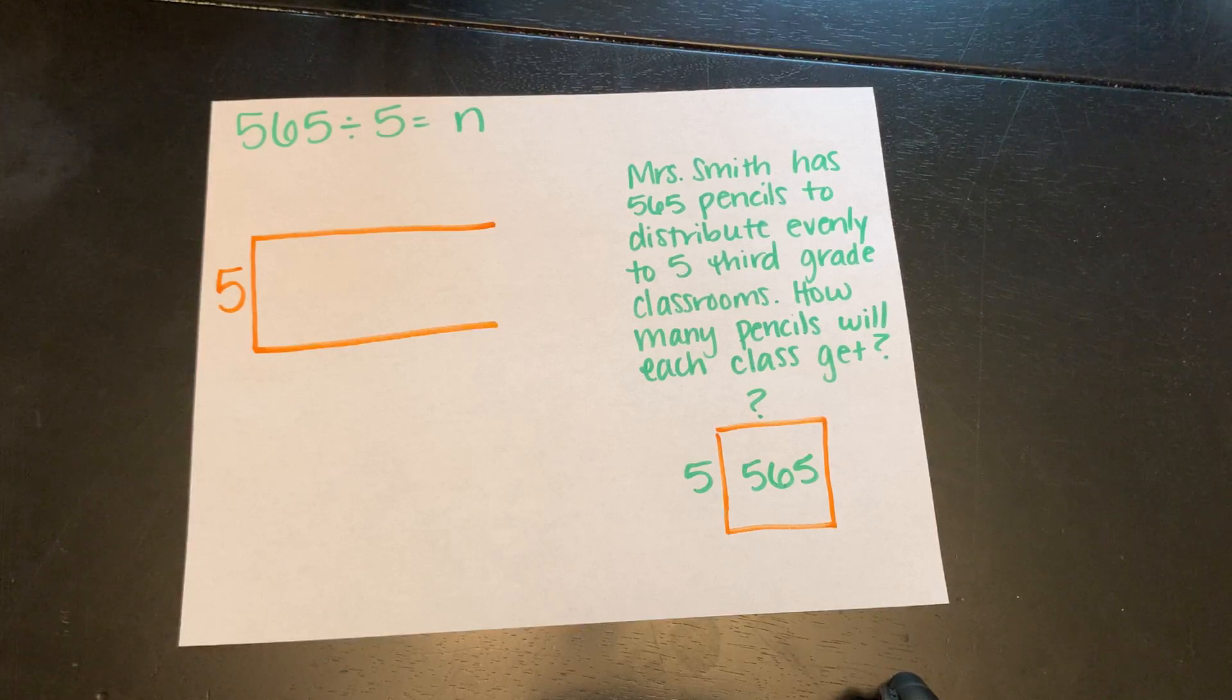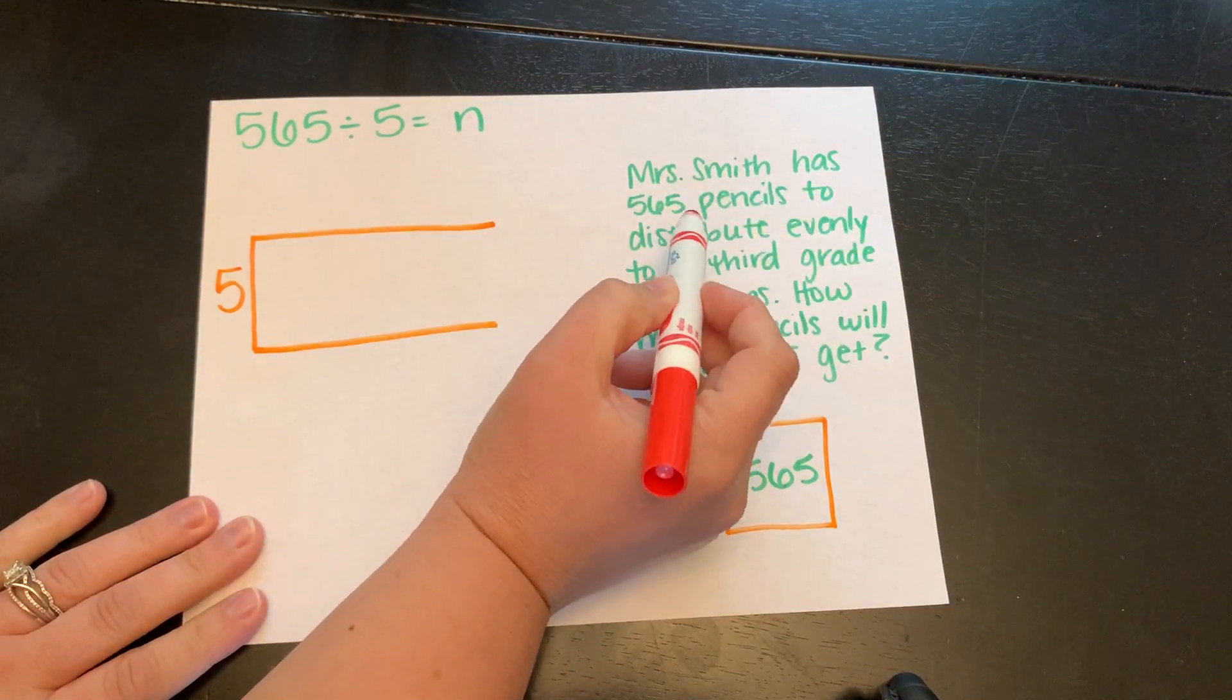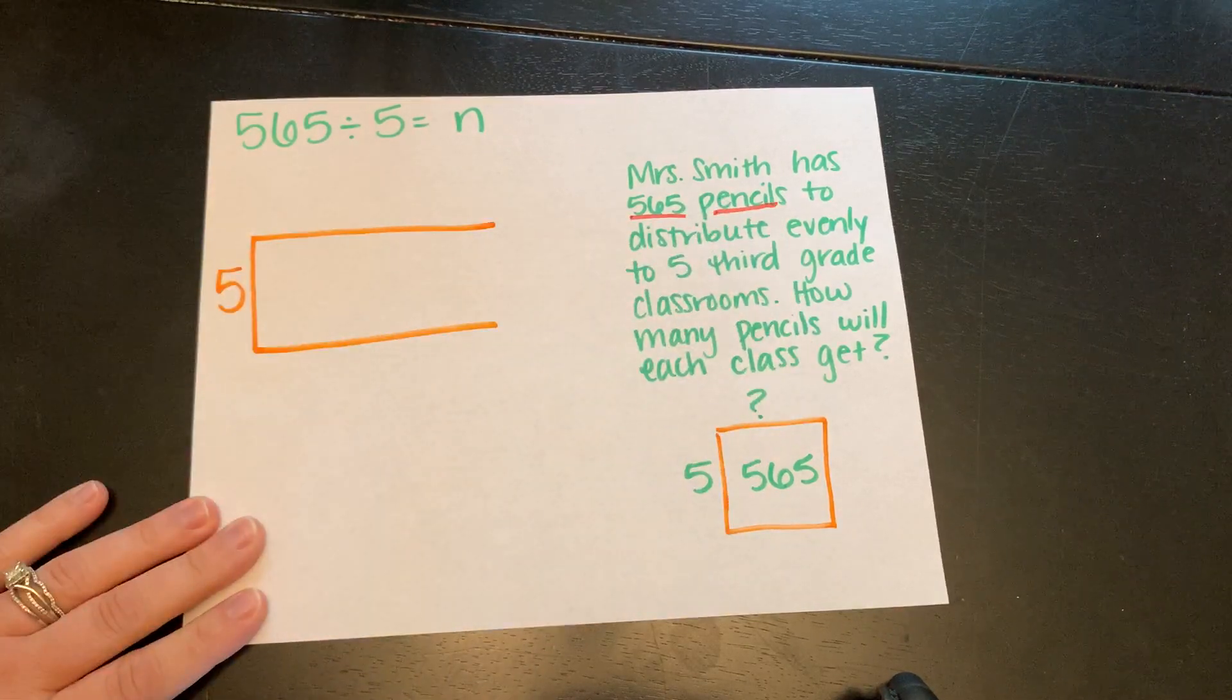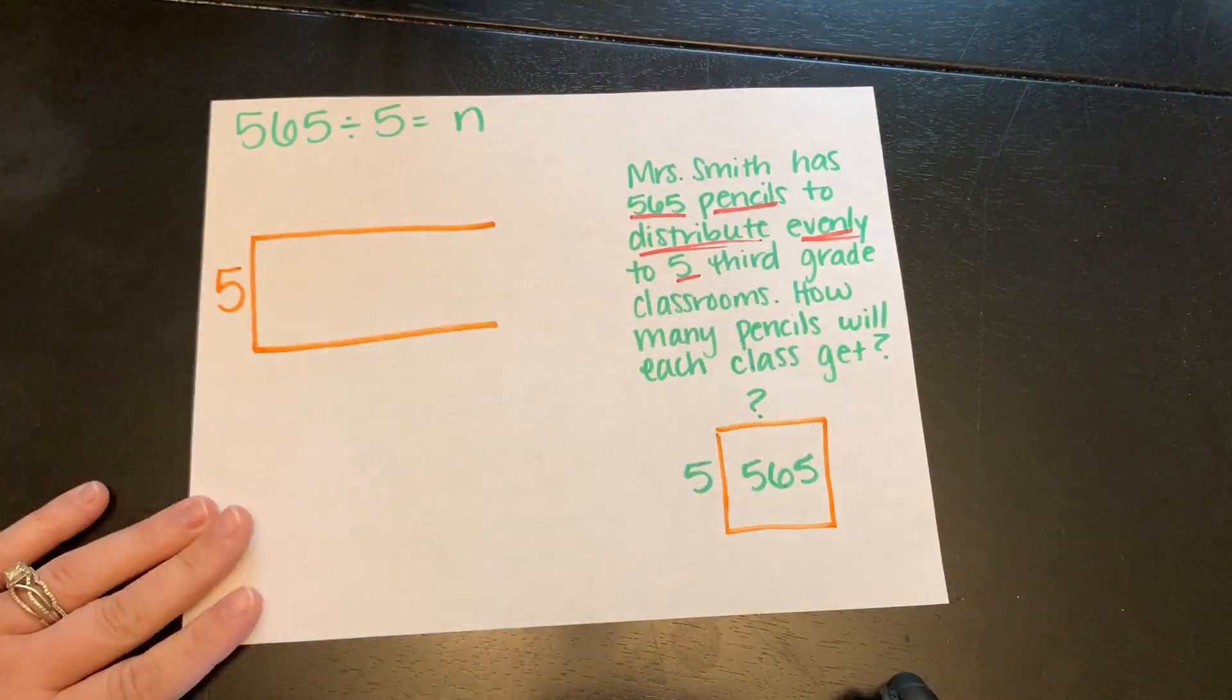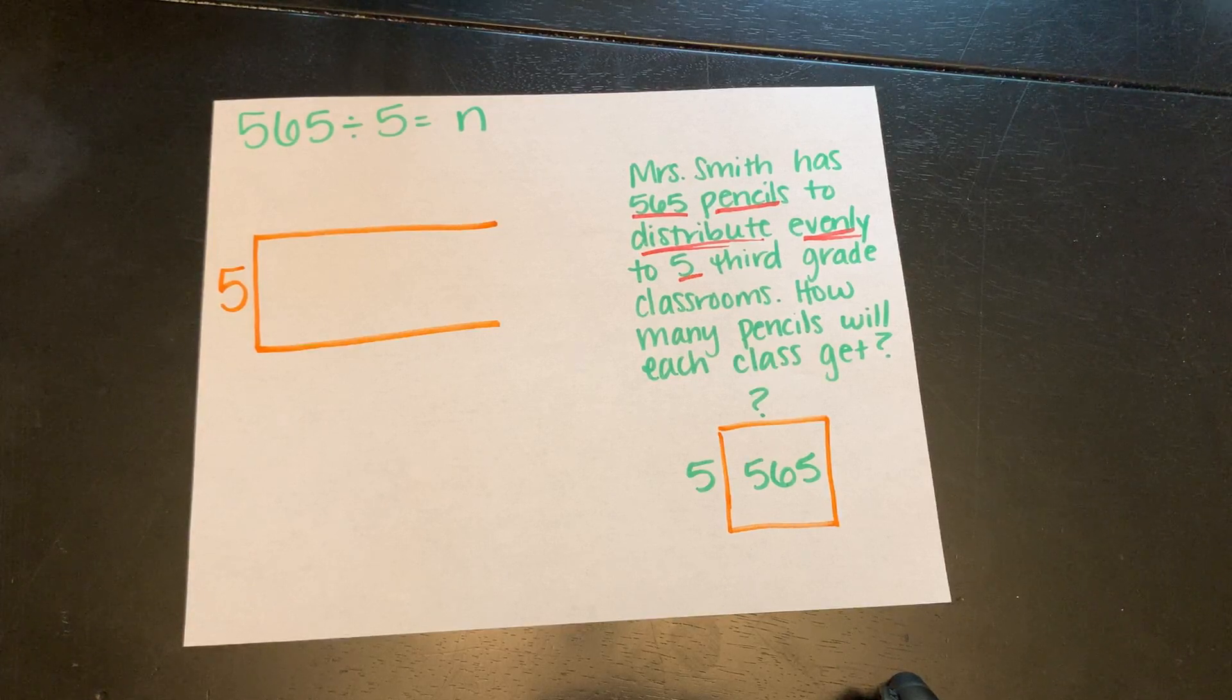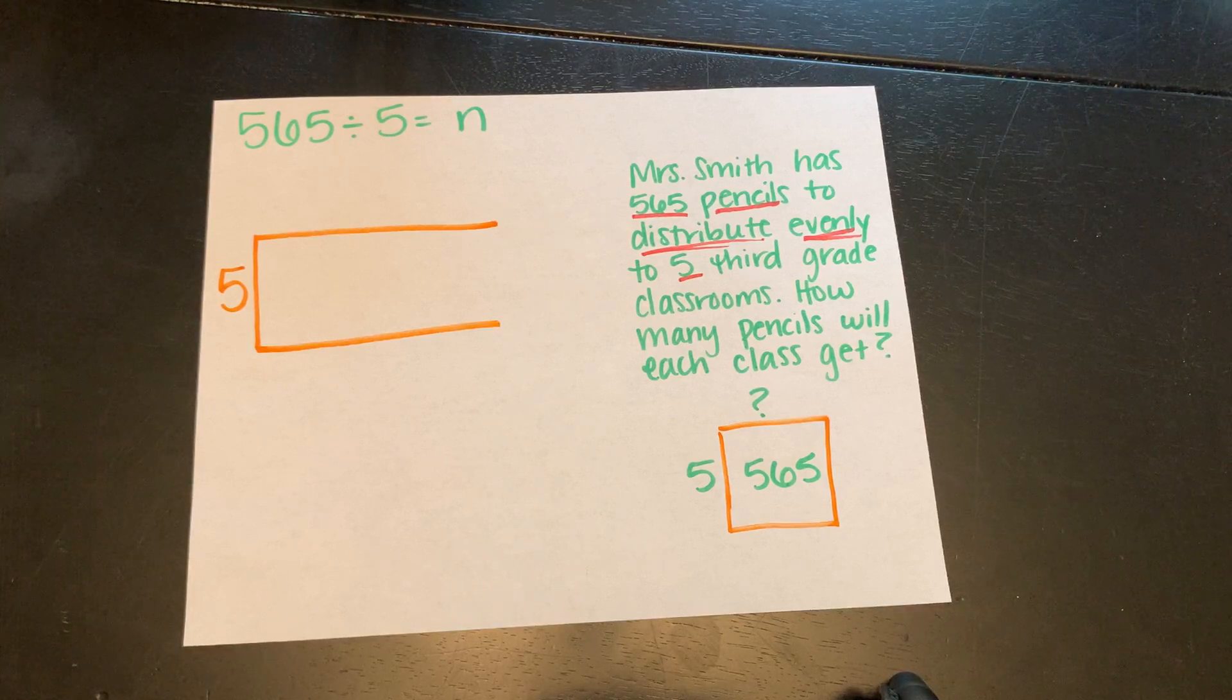You can pause this video and do your three-read strategy if you would like. I noticed when I read this that there's some important information. Mrs. Smith has 565 pencils and she's going to distribute them evenly to five third-grade classrooms. When I see distribute evenly, that is a key phrase that reminds me we're probably going to be doing division. If we distribute something evenly into groups, that's division.